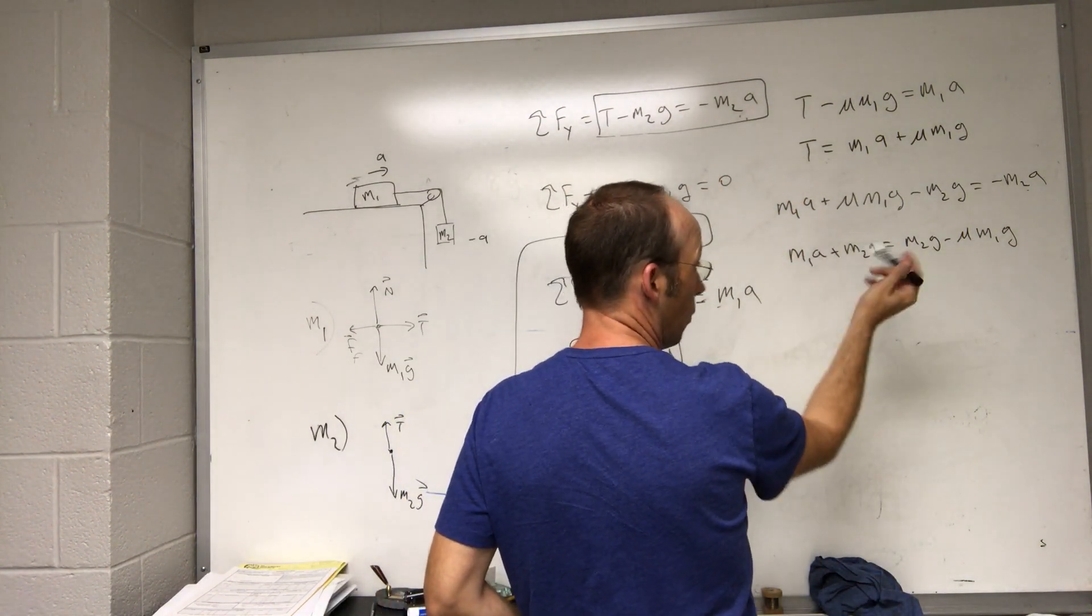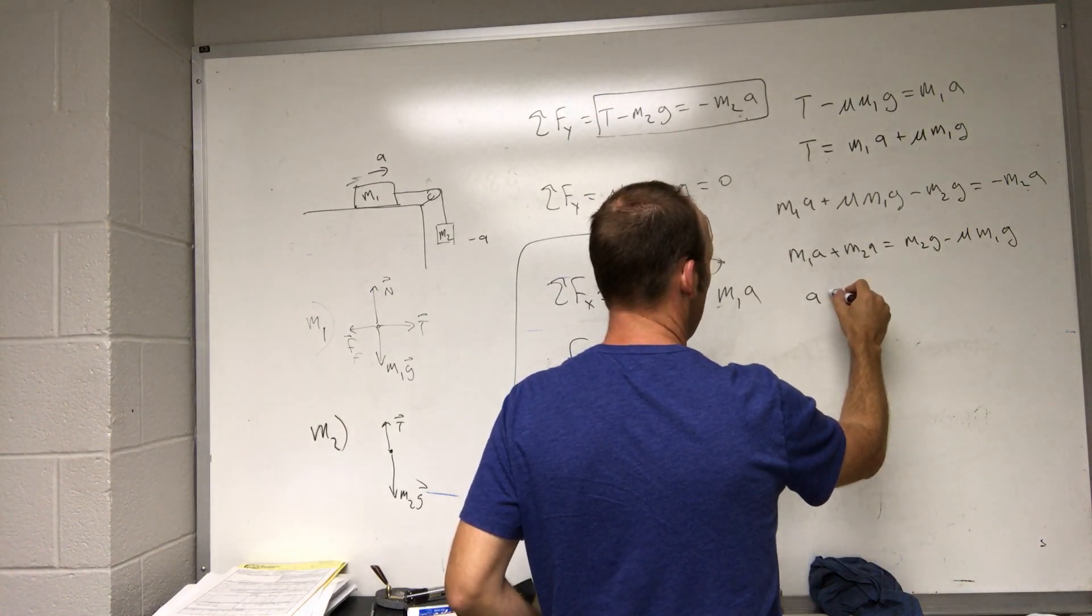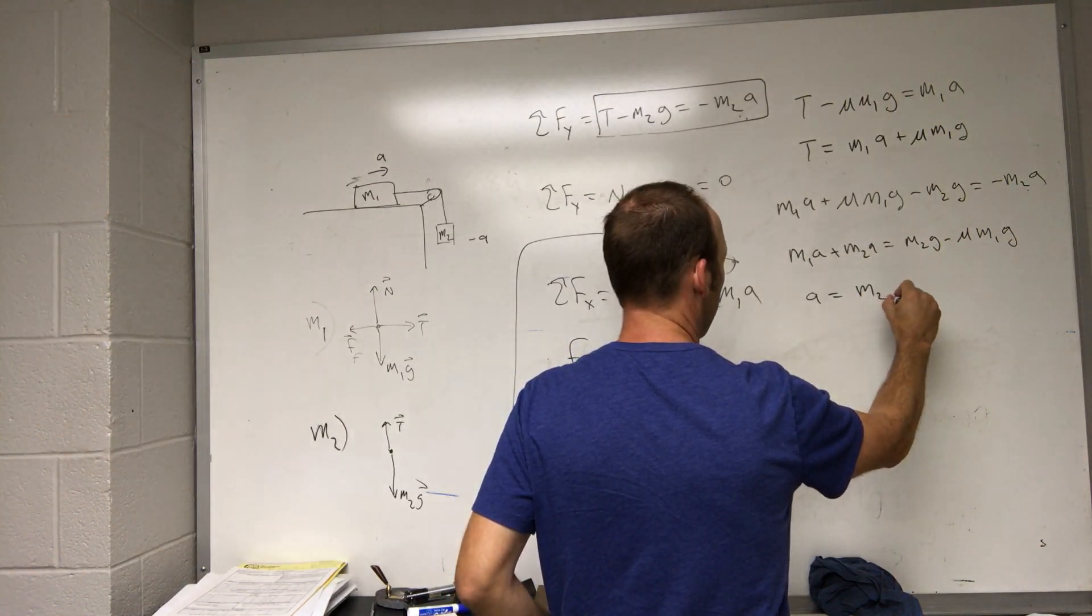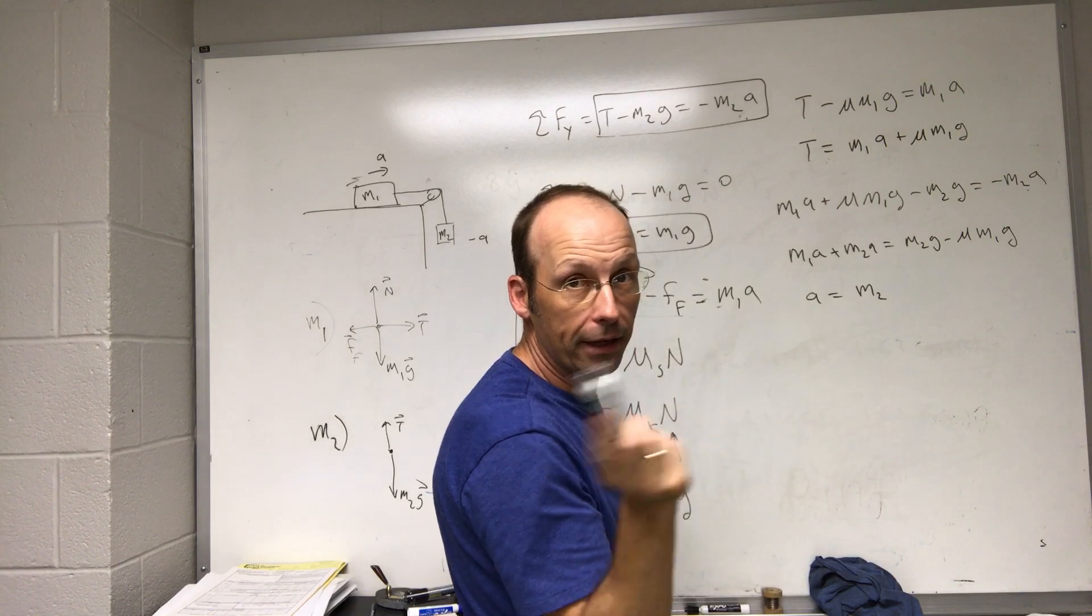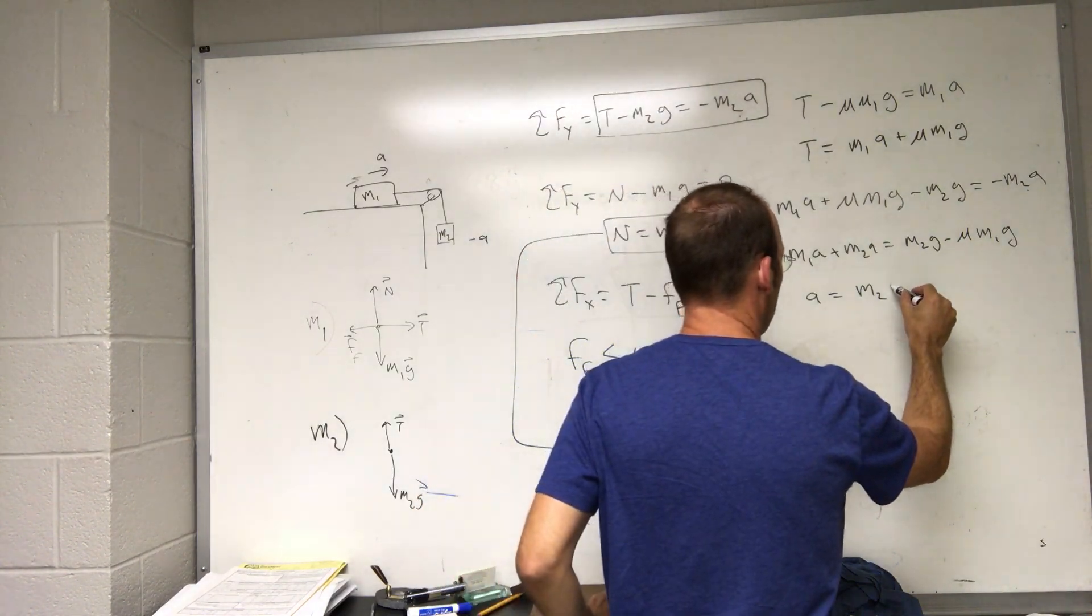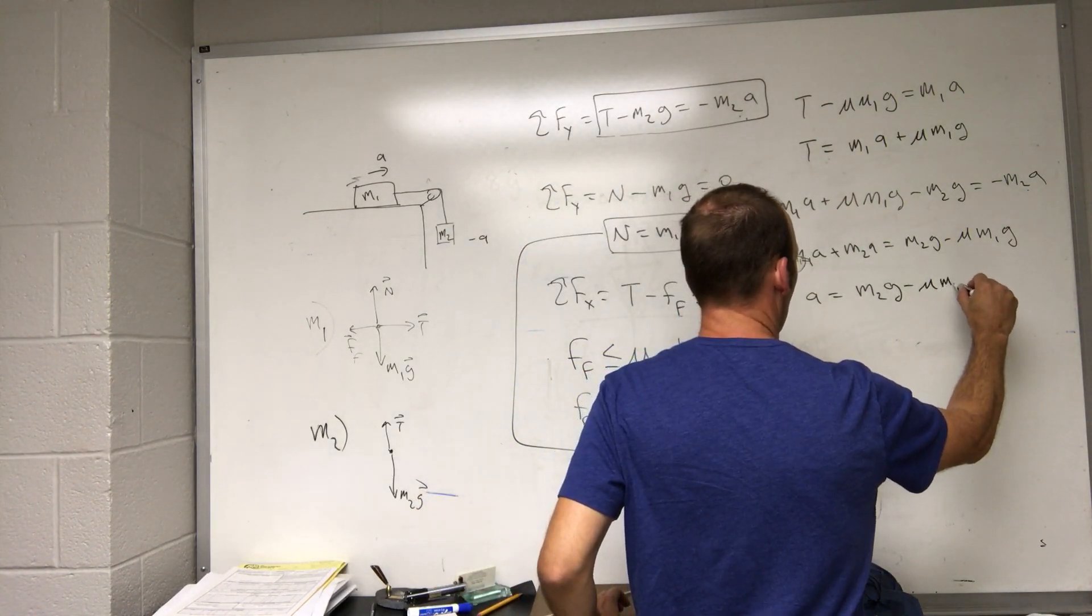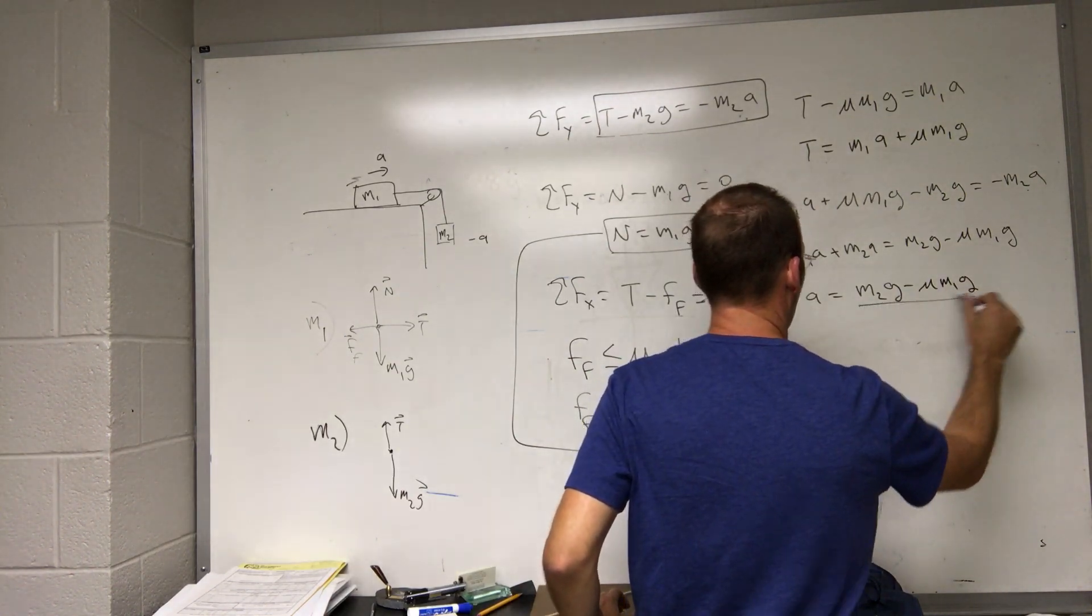Okay, now I can factor out the a, divided by m1 plus m2, and I have my answer: a equals, I skipped a step but you can go back and check for yourself, m2 G minus mu m1 G over m1 plus m2. That's acceleration.